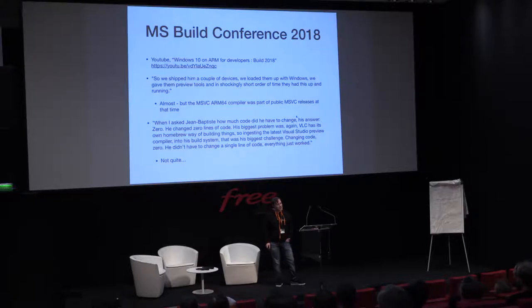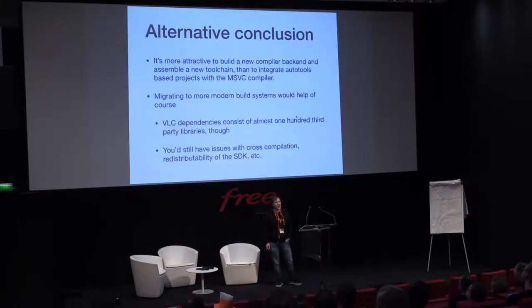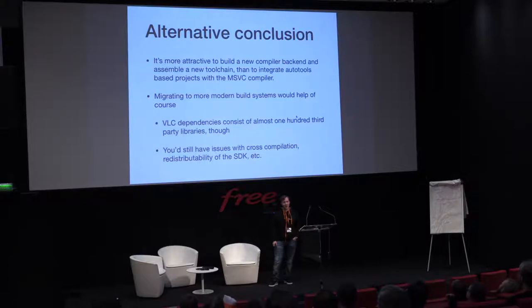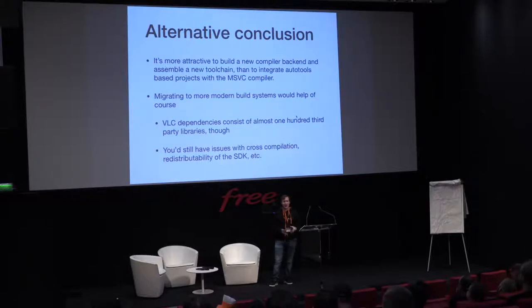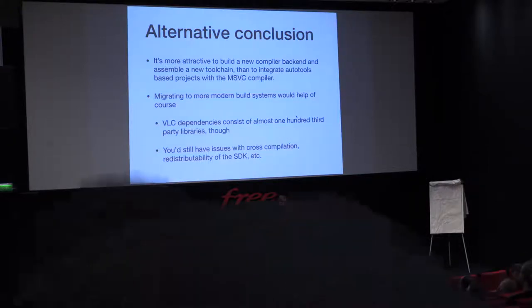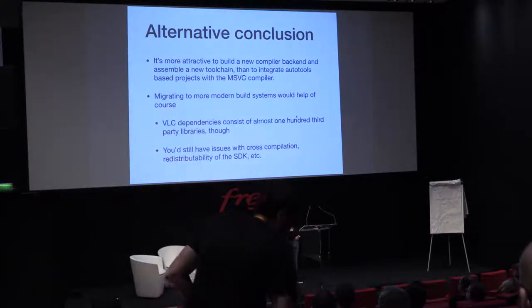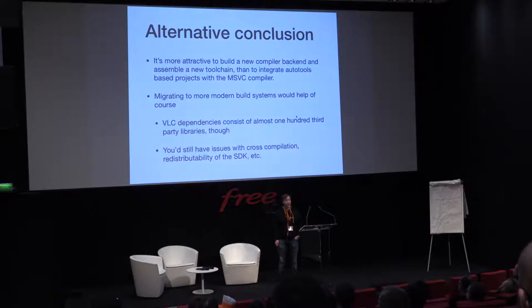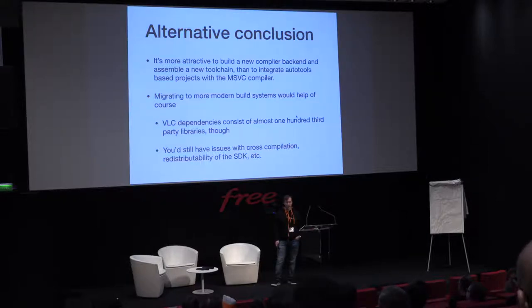Well, JB didn't change the code — I did. But from this you can draw an alternative conclusion: you could use MSVC, but it's more painful to integrate into the other tools' build systems than to just write a new toolchain environment. If you can use MSVC with modern build systems like CMake or Meson, it's easier — but you still have the issue of cross-compiling being hard, and the SDK not being freely redistributable, which is an issue for organizations like VLC.